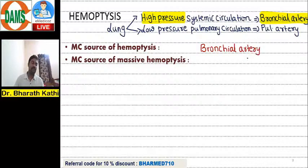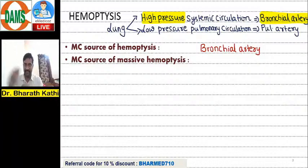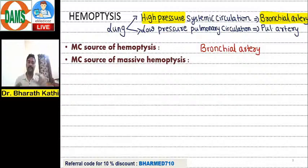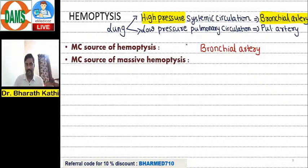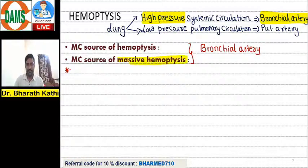The most common source of massive hemoptysis is also the bronchial artery. Whenever a high-pressure vessel ruptures, it is difficult to control the flow, so blood loss will be more. Both most common source of hemoptysis and most common source of massive hemoptysis — the answer is bronchial artery.